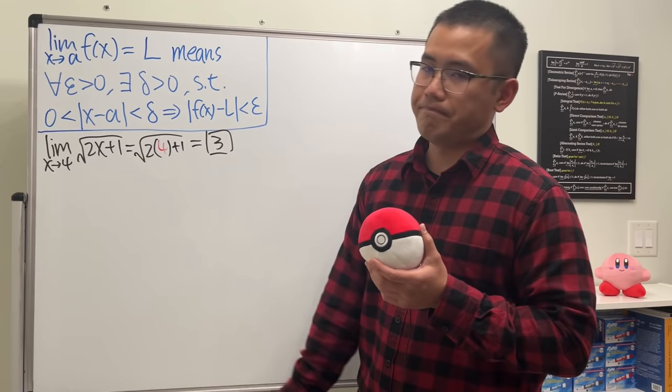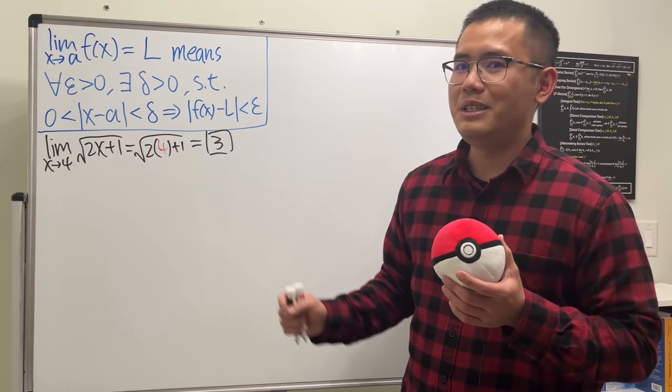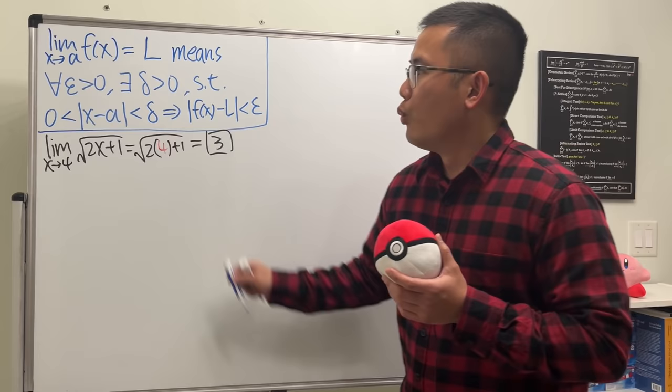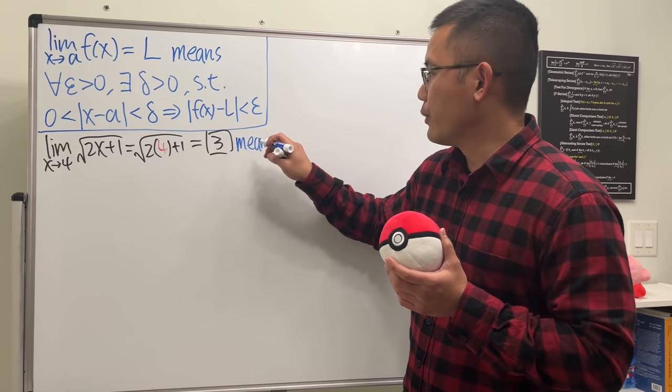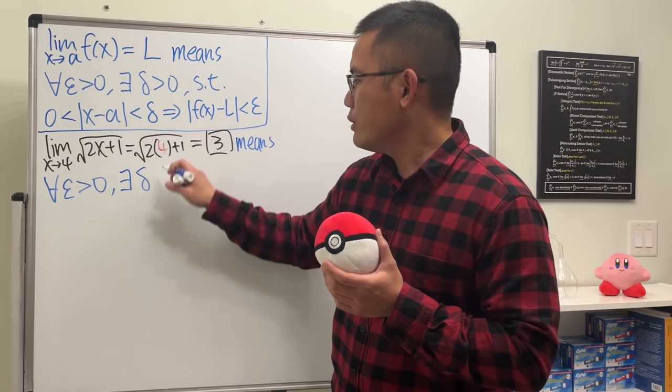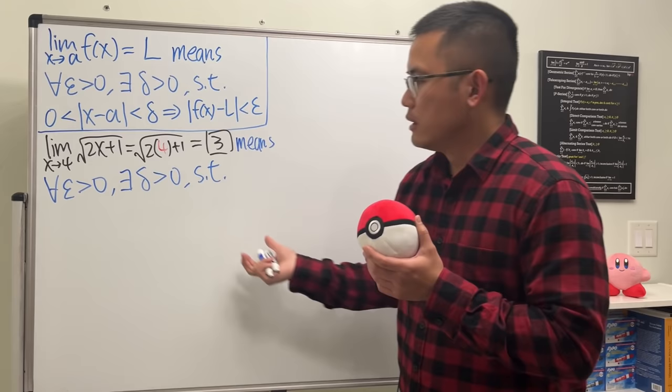But now mathematicians ask: how do we know this is indeed equal to 3? Where's the proof? So this is when we use the epsilon-delta definition. Based on the definition, this means: for all epsilon greater than zero, there exists a number called delta that is greater than zero, such that the following property holds.